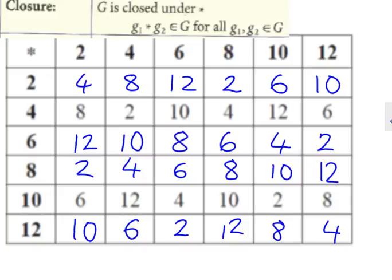First one, show that the set is closed under the operation. Now, that simply means if I take any element in the set and combine it with any other element in the set, it's still in the set. The answer is still in the set. It doesn't go out of the set. Hence the word closed.